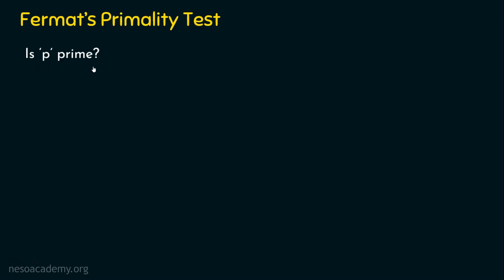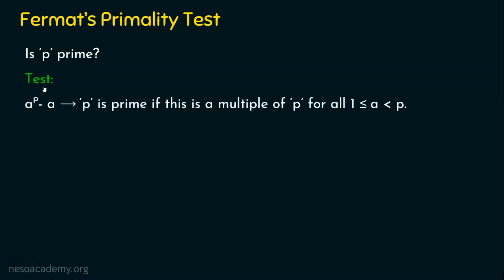Say a number p is given — is p prime? Fermat's primality test will answer that. There is an algorithm, and it is based on a test: computing a^p minus a. When given a number p to determine whether it is prime, the algorithm computes a^p − a. p is prime if a^p − a is a multiple of p for all values of a from 1 to less than p. This primality test mainly depends on the formula a^p − a.